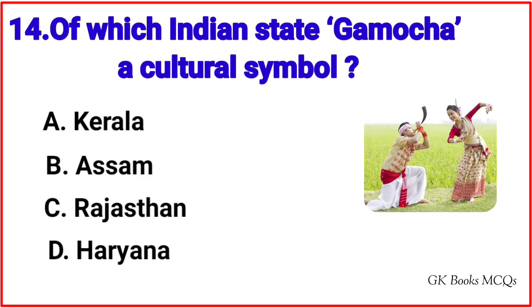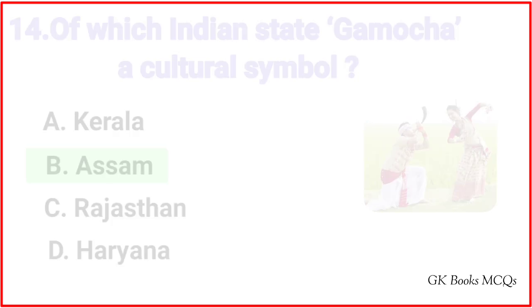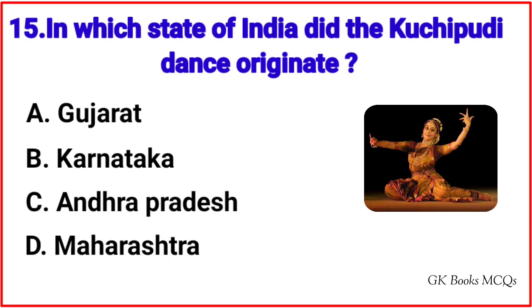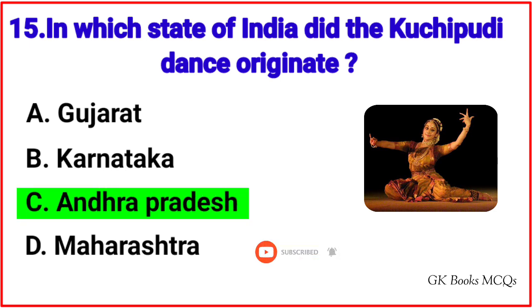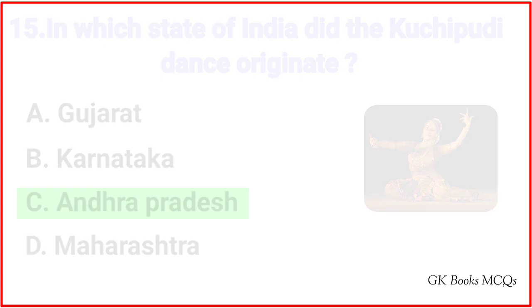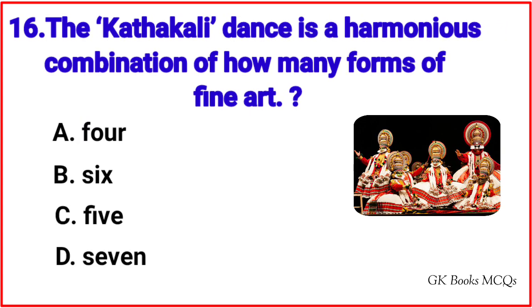Question number 14: Of which Indian state is Gamacha a cultural symbol? Correct answer is option B, Assam. Question number 15: In which state of India did the Kuchipudi dance originate? Correct answer is option C, Andhra Pradesh. Question number 16: The Kathakali dance is a harmonious combination of how many forms of fine art? Correct answer is option C, Andhra Pradesh.